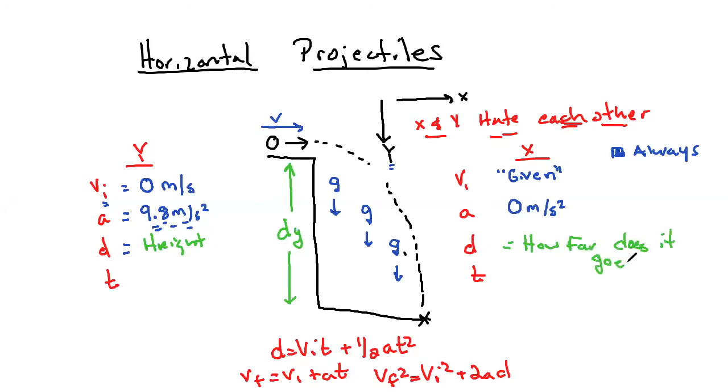And D in the X direction is going to be how far does it go. And your lab with the ball rolling off the desk, this is the variable that you want to find. You want to know where is it going to go from the edge of the table when it hits the floor. So what the teacher is going to do is they're either going to tell you how high the desk is and how far. And you are going to have to figure out this information.